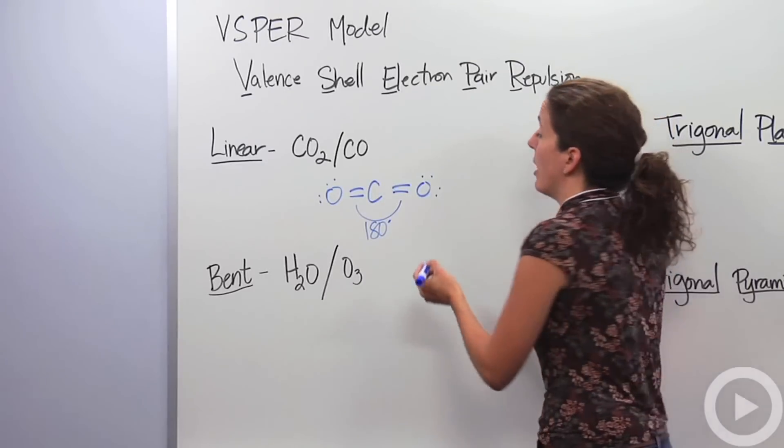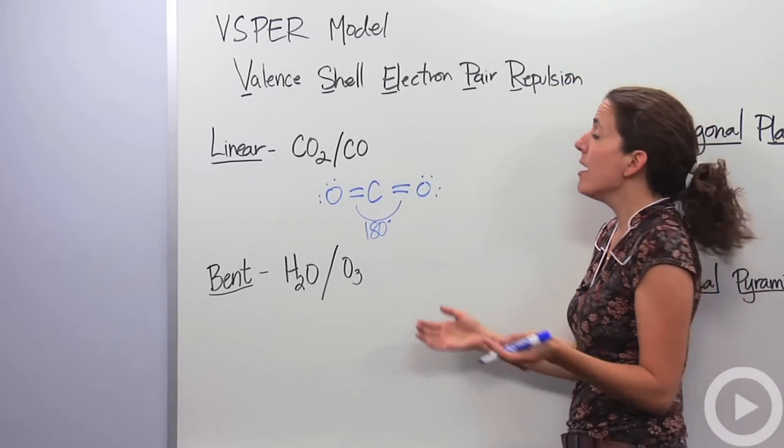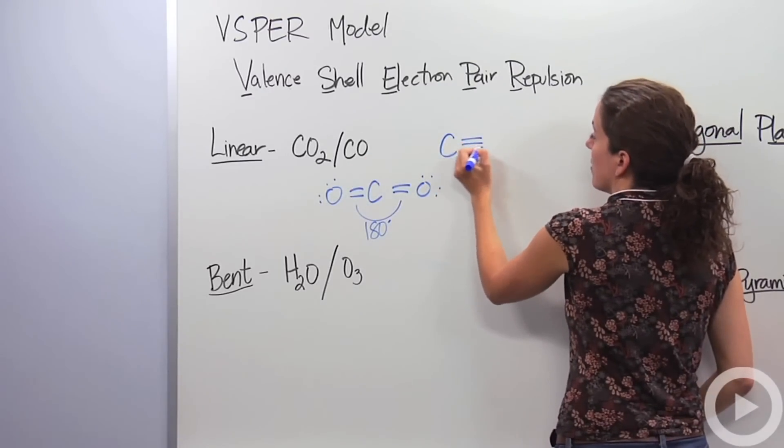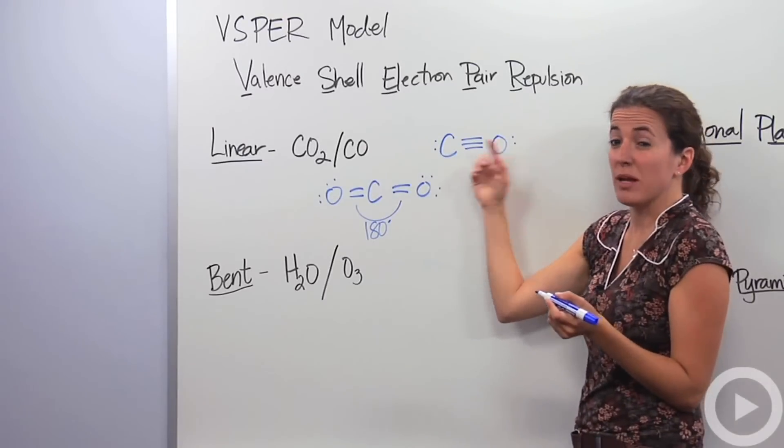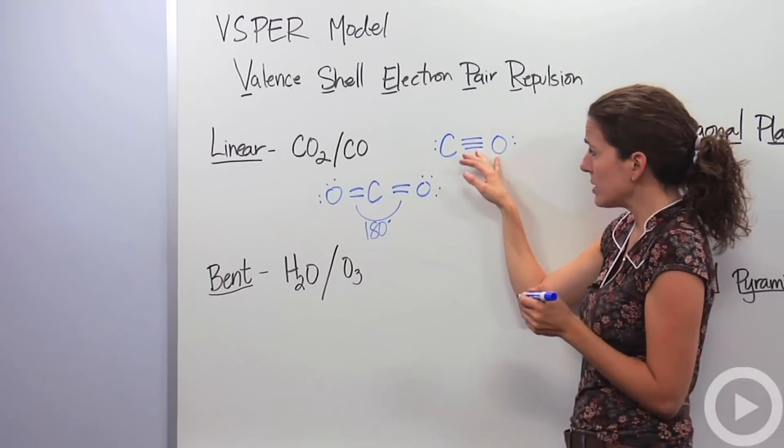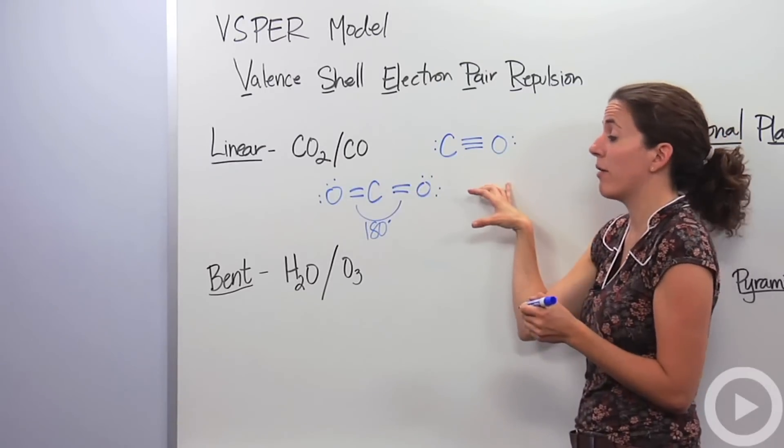Another type of linear that you might see is carbon monoxide, which is two atoms. Any time you see two atoms, no matter what they are, they're going to have a linear shape. So carbon monoxide is triple bonded. No matter what, these are going to be straight across from each other, an angle of 180. So these two types of molecules are linear molecules, they're straight across.